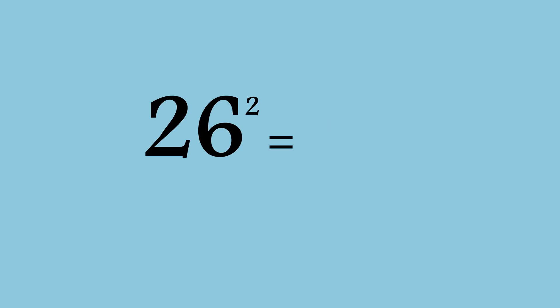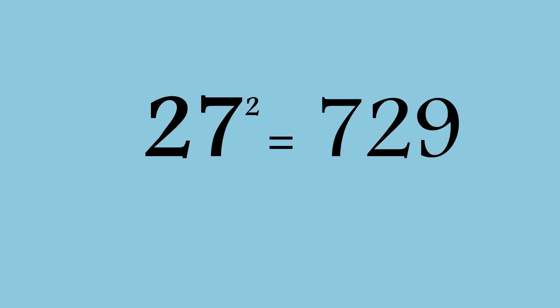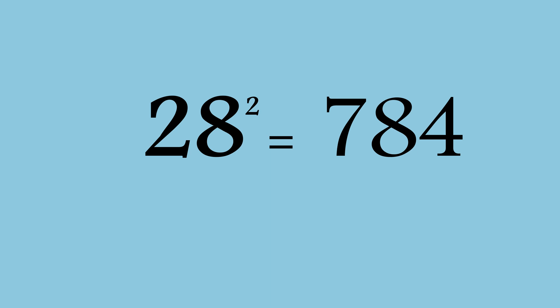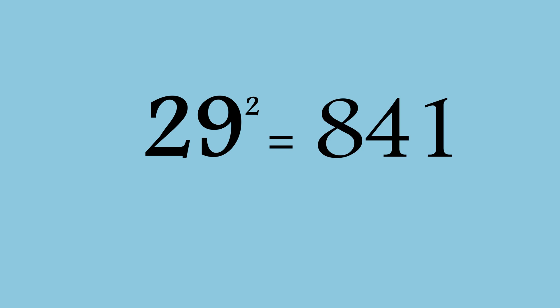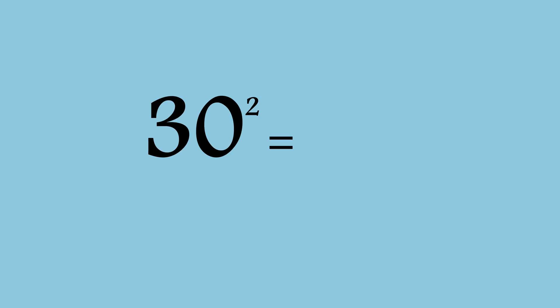26 square is 676. 27 square is 729. 28 square is 784. 29 squared is 841. 30 squared is 900.